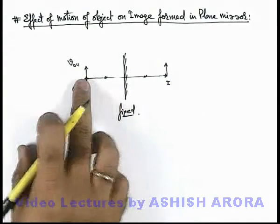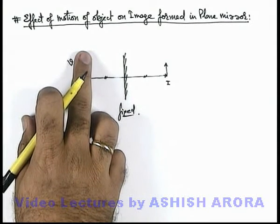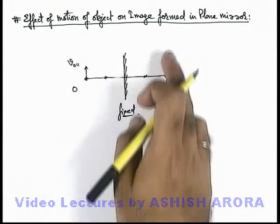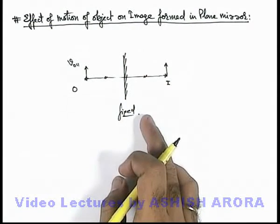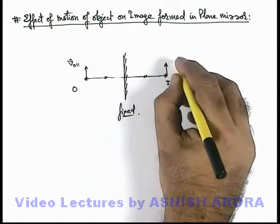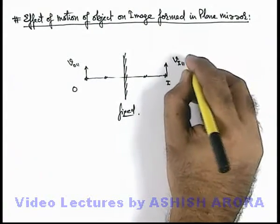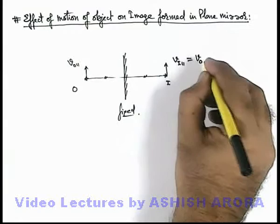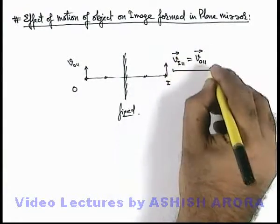So if the object moves by distance x in front of the mirror, then the image will also move a distance x so that the laws of reflection remain valid. We can see the velocity of the image parallel to the mirror will be exactly equal to the velocity of the object parallel to the mirror. This relation we can directly keep in mind.